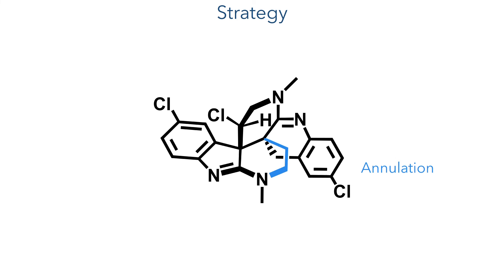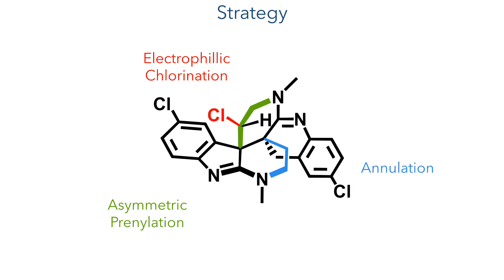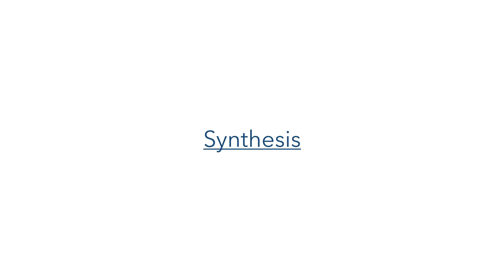To stereoselectively construct this ring system, they carried out a one-pot annulation reaction consisting of two nucleophilic substitutions. This stereochemical bias would be introduced via an asymmetric preannulation reaction earlier in the synthesis, while an electrophilic chlorination could functionalise the neopentyl centre. So let's jump into the synthesis with this asymmetric preannulation.